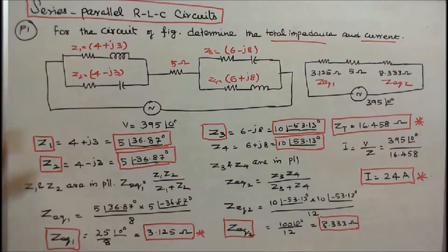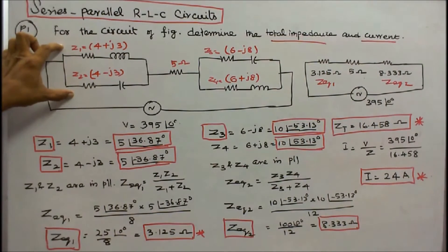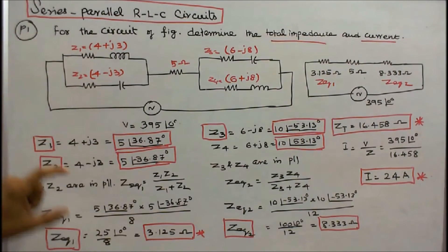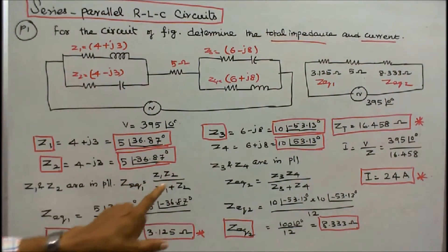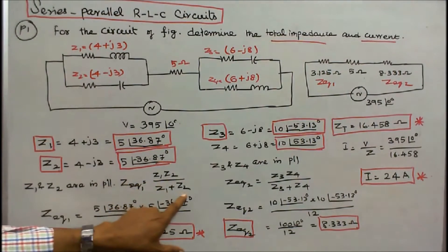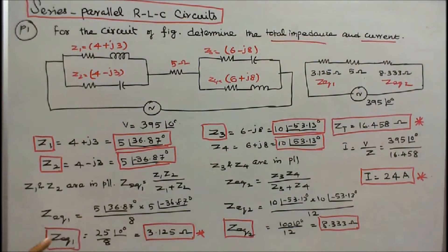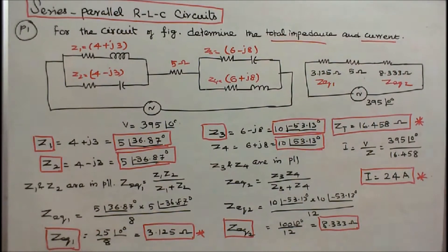These two are connected in parallel. The equivalent is Z1·Z2 divided by Z1 + Z2. Z_equivalent = 25∠0 divided by 8, which equals 3.125 ohms.